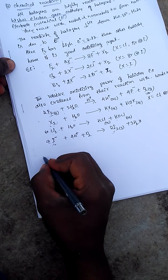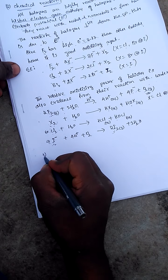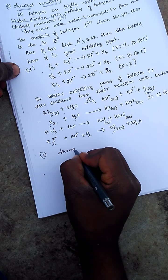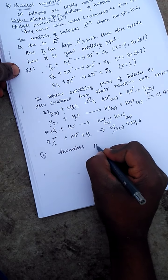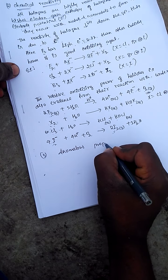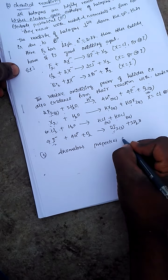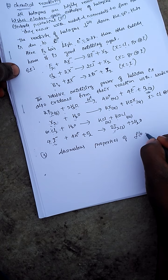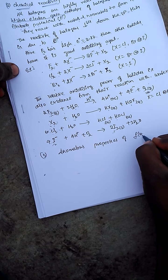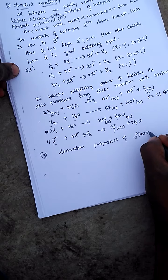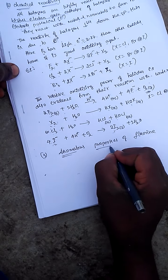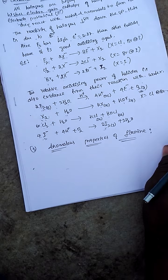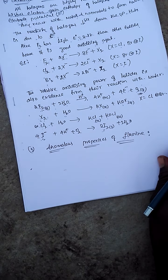This is the reactivity of halogens. The third chemical property is anomalous properties of fluorine.